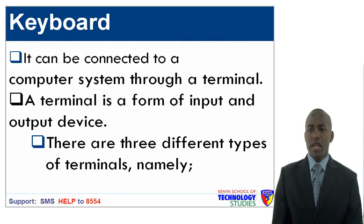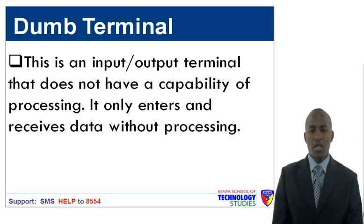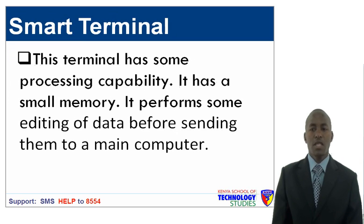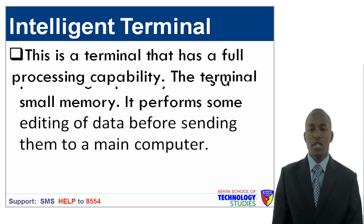It can be connected to a computer system through a terminal. A terminal is a form of input and output device. There are three types of terminals. The first is a dumb terminal — an input or output terminal that does not have processing capability; it only enters and receives data without processing. The second is a smart terminal, which has some processing capability and a small memory, and performs some editing of data before sending it to the main computer.